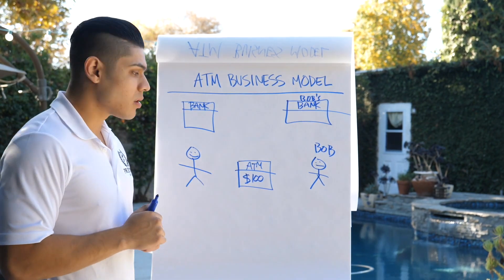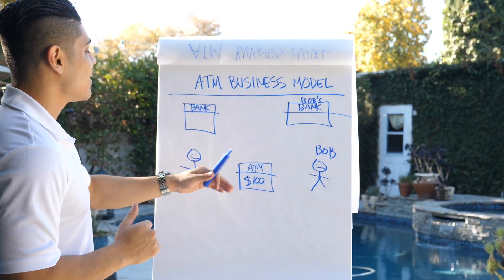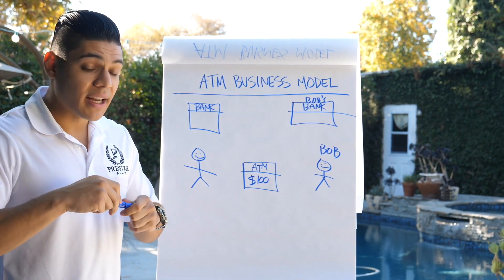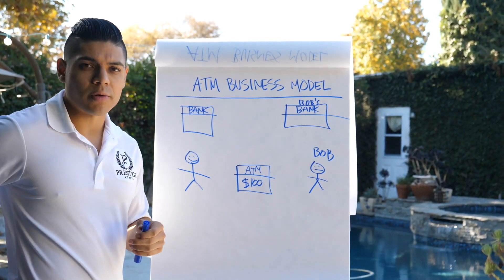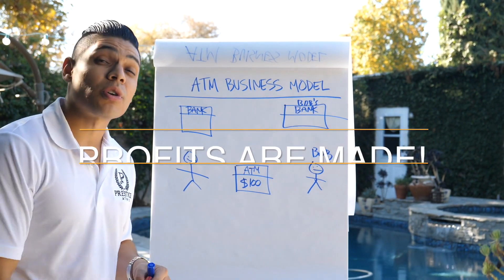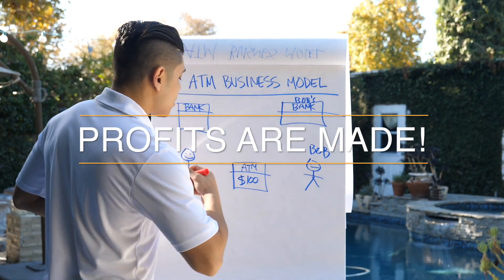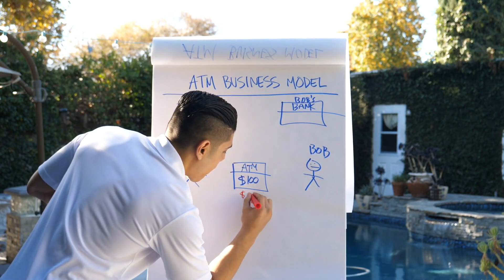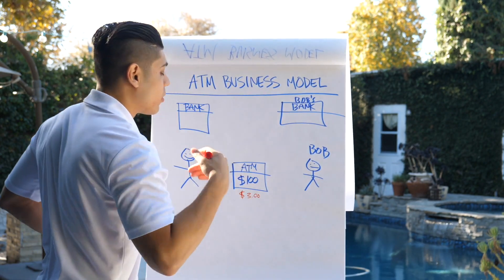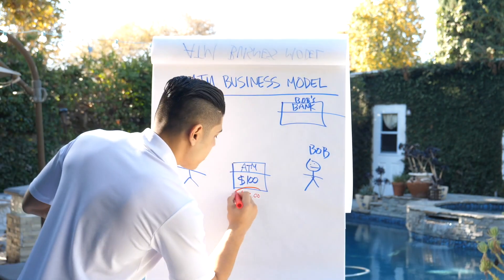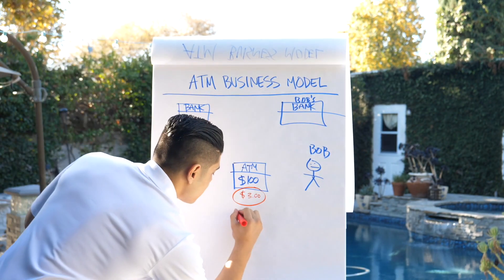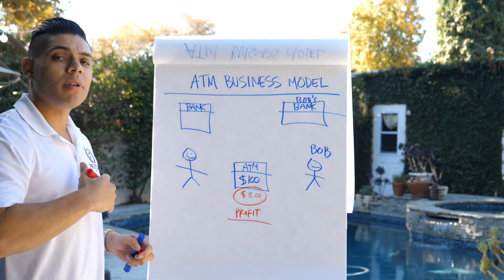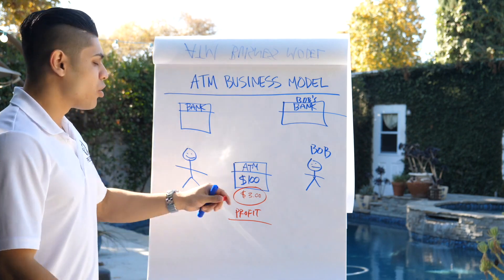Bob needs a hundred dollars, so he's going to go to your ATM. He's going to put in his debit card, put in his pin, and he's going to accept your surcharge. Your surcharge is basically where you're going to make your profit. For example, let's say you're charging three dollars for people to use your machine. We call this your profit — every time somebody uses your machine, you're going to make three dollars.